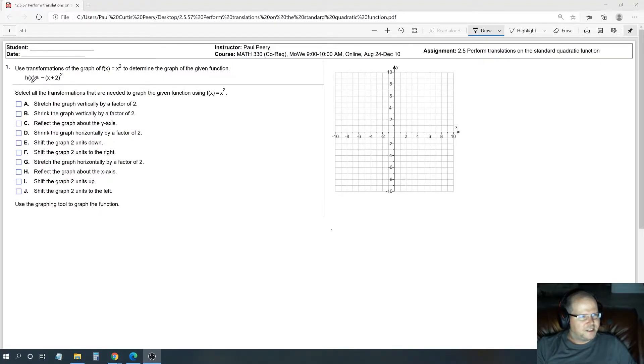Right, function h of x is equal to negative parenthesis x plus 2 in parenthesis squared. Alright, so there's nothing added to the end of this equation right here, and that would have a direct influence upon the y value.